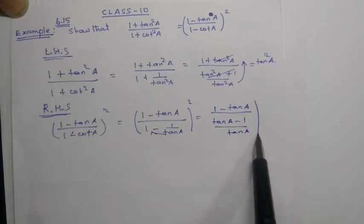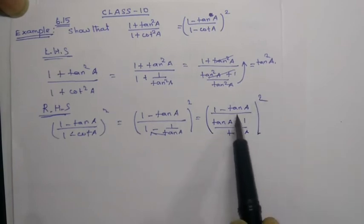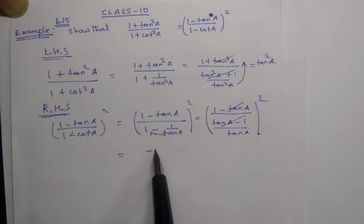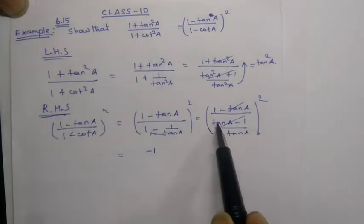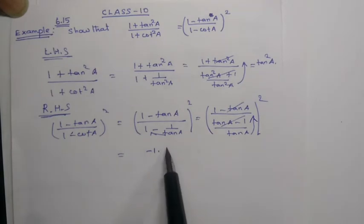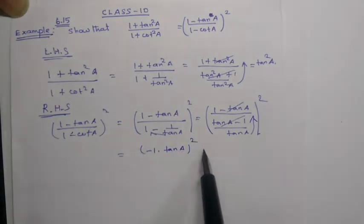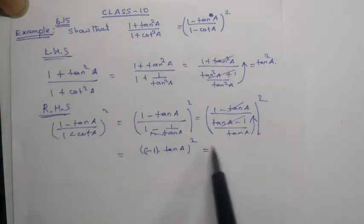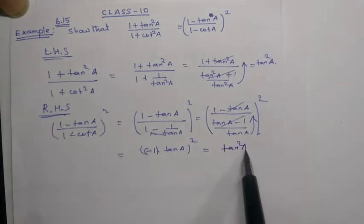This equals 1 minus tan A divided by tan A minus 1 over tan A, whole square. The tan A minus 1 terms cancel with a minus sign, giving minus 1 into tan square A. Minus 1 square is plus 1, so we get tan square A, which simplifies to 1.